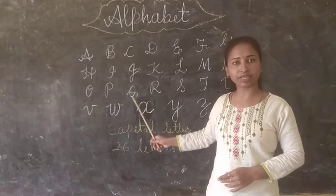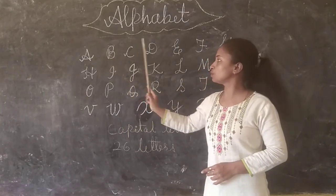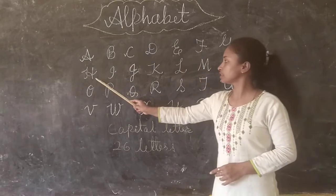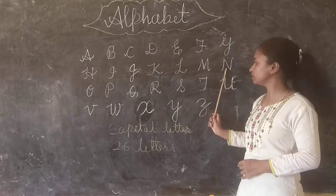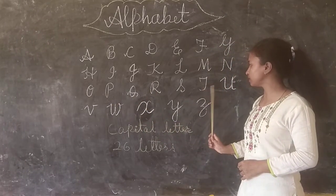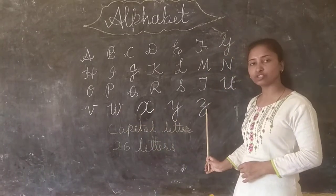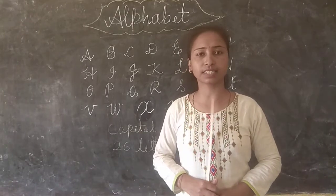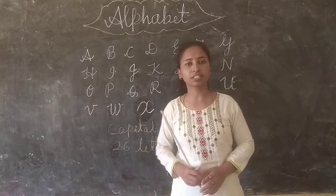Now, in alphabet how many letters are there? 26 letters. Let us count it: 1, 2, 3, 4, 5, 6, 7, 8, 9, 10, 11, 12, 13, 14, 15, 16, 17, 18, 19, 20, 21, 22, 23, 24, 25, and 26. So all together how many letters are there in alphabet? 26 letters. Now further I will teach you how to write alphabet in small letter.